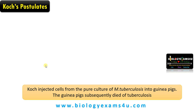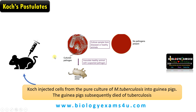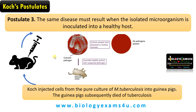Koch then injected cells from the pure culture of Mycobacterium tuberculosis into guinea pigs and found that these pigs died of tuberculosis. From this he formulated the third postulate: the same disease must result when the isolated microorganism is inoculated into a healthy host.